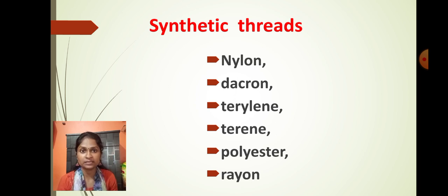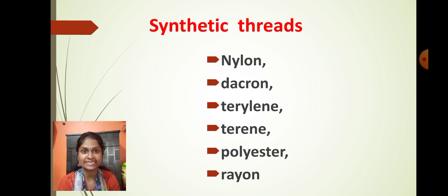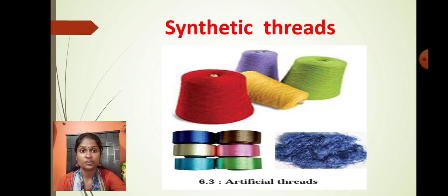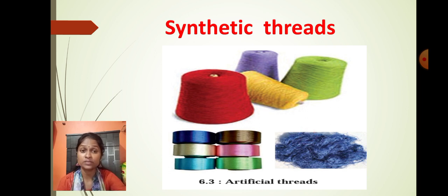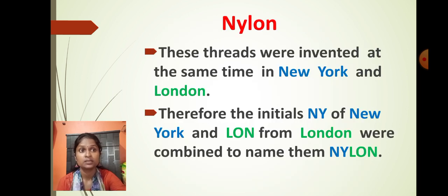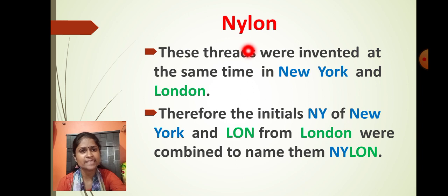This is the list of threads we can obtain artificially, instead of using natural things like cotton and silkworm. Now let's see how we can obtain nylon and rayon. These are the synthetic threads — this is how synthetic thread looks like, and you must have seen them at home. Let's see how these synthetic threads are obtained. First, let's talk about nylon. Do you know why we call it nylon?